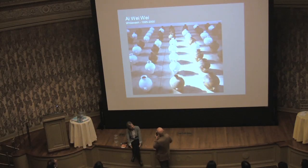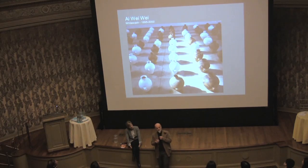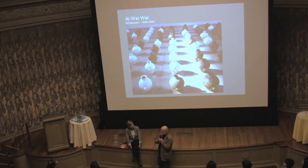This is another work by Ai Weiwei, and it has to do with tradition. It's altogether 132 Neolithic vases, and about one-fourth he covered with white industrial paint. It's about the clash of Chinese tradition and Chinese culture with Western industrial culture overpowering China in the 80s and 90s.